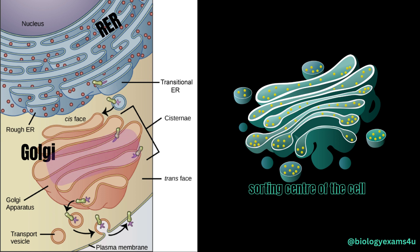The medial cisternae is the processing site where modification and glycosylation occurs, and then there is the trans Golgi network where modified proteins are pinched off as vesicles. Proteins from the RER enter the Golgi where they are properly addressed and tagged. For example, a protein targeted to the lysosome is tagged with mannose-6-phosphate. Similarly, different tags exist for mitochondrial proteins, nuclear proteins, etc. If the protein is untagged, the default pathway is secretion out of the cell by exocytosis.